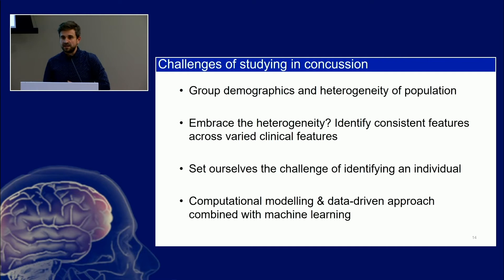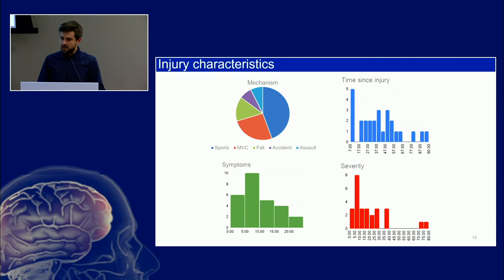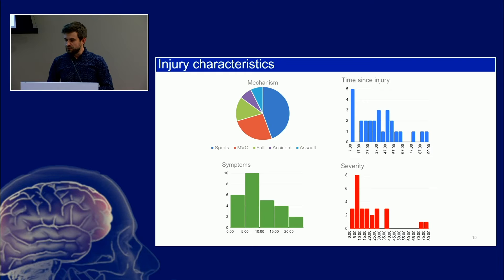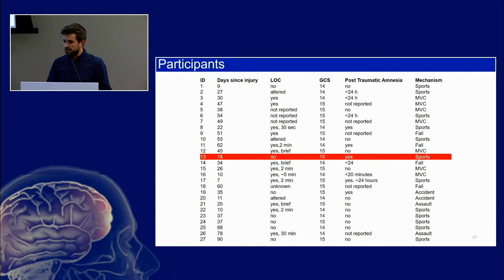He used computational modeling, a data-driven approach, combined with machine learning. Here are the injury characteristics of our group — it's quite varied, many different mechanisms, for the most part sport, but falls, injuries, accidents, even some assaults. We had a mixed bag of time since injury, mostly in the acute and sub-acute stage but moving into the chronic phase as well. We had a scattering of symptoms — some were pretty much asymptomatic, some had pretty severe symptoms measured on the SCAP. We selected one participant, ID13, about three weeks out from an MTBI, never lost consciousness, GCS of 15, some slight PTA, injured playing sports.